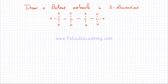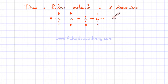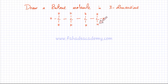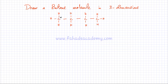Let's draw the butane molecule in three dimensions. Butane has four carbon atoms. The displayed formula shows which atoms are bonded to which, but it does not tell you the three-dimensional geometry or bond angles. Although each carbon makes four bonds, the actual shape is not flat as drawn. All four carbon atoms each adopt a tetrahedral geometry around themselves.